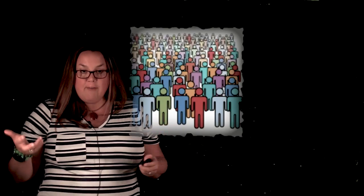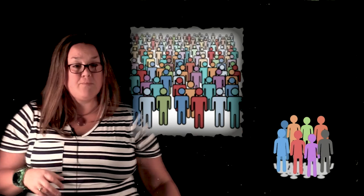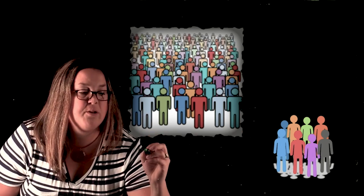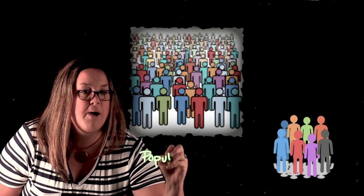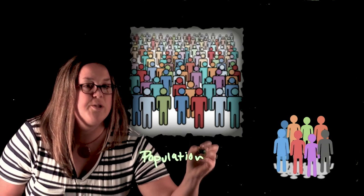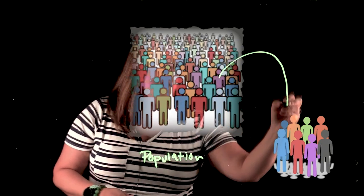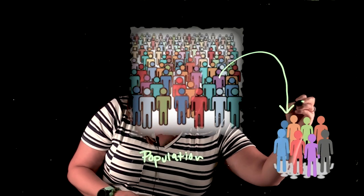So again, if you have an entire population and you do some sampling methods, so this would be an example of an entire population. And remember the goal is to do some sampling method to get a smaller group or a sample.